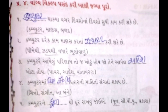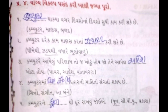કામ ધીમું અને ભૂલોવાળું થઈ જાય છે. વિદ્યાર્થી મિત્રો, જો આદેશ ખોટો આપેલો હોય, જો નામ ખોટું હોય, તો આપણો આદેશ ખોટો હોય ત્યારે જ આ સ્થિતિ આવે છે. આ છે નંબર ચાર.